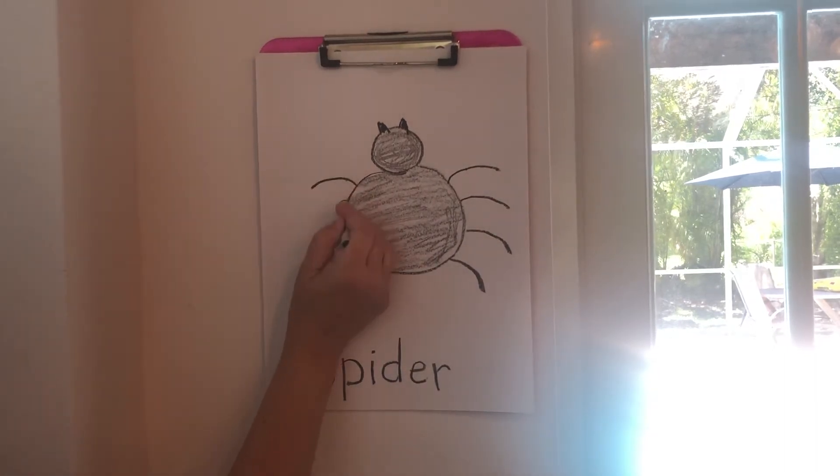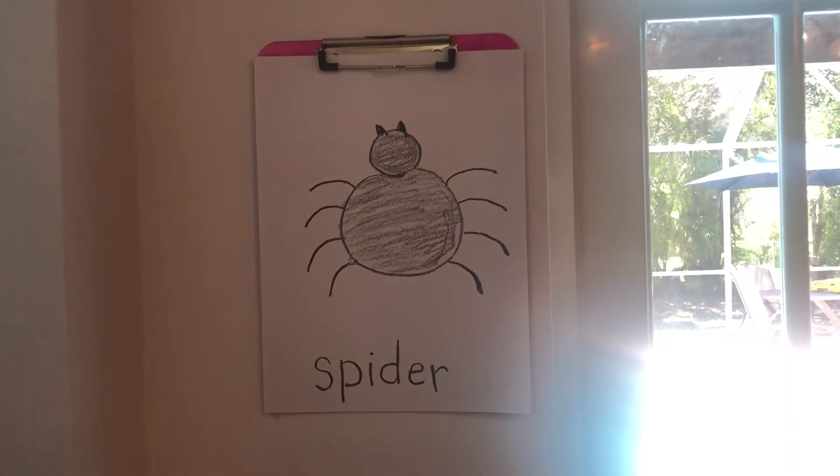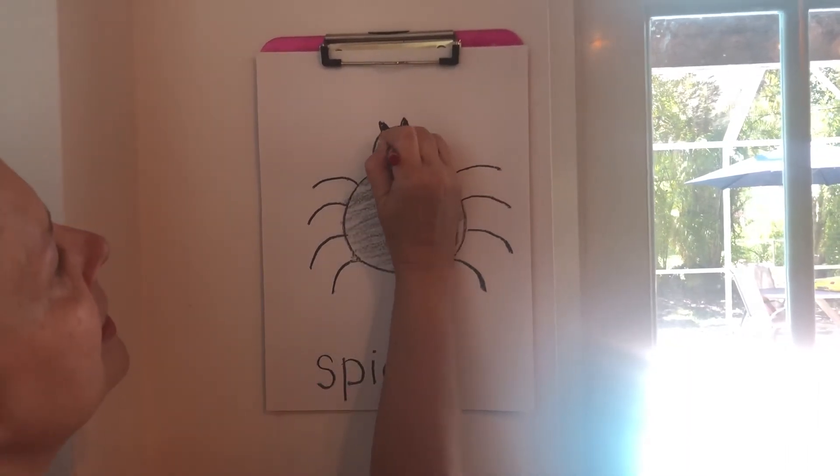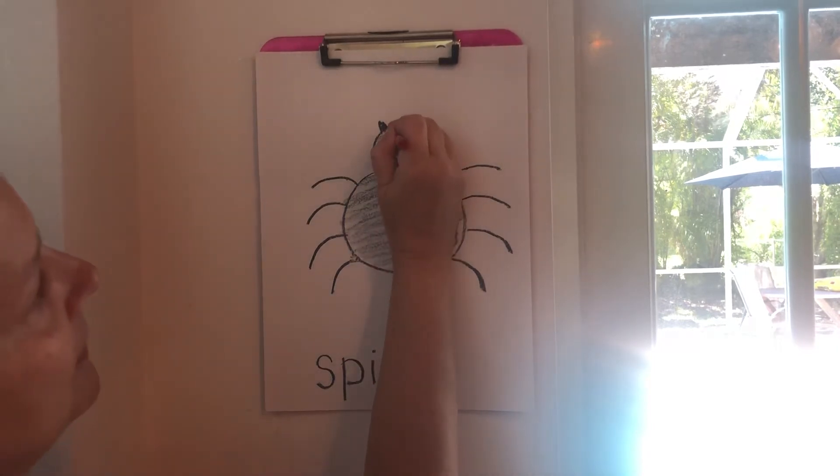And then the last thing we're gonna do, we're gonna take a red crayon and make two eyes. Now spiders have eight eyes, so you can make all eight if you want. There we go, you can make a silly spider.